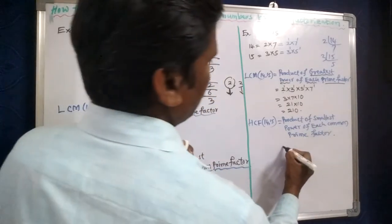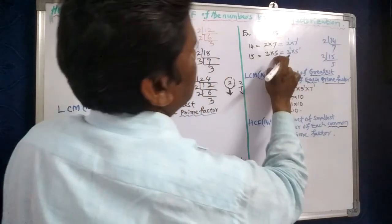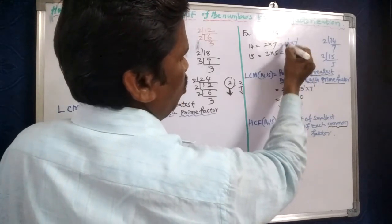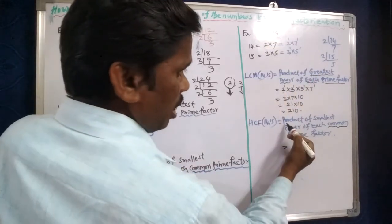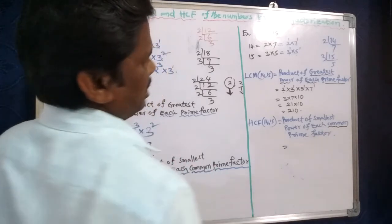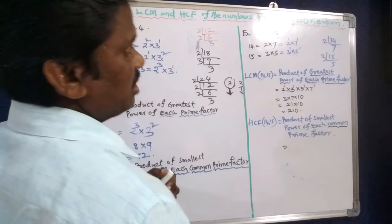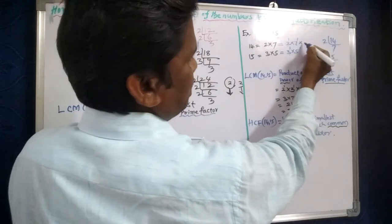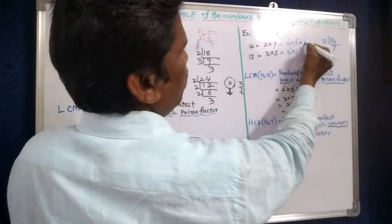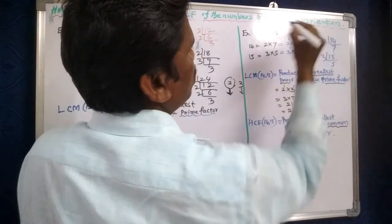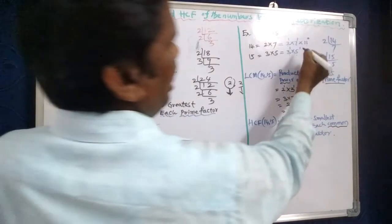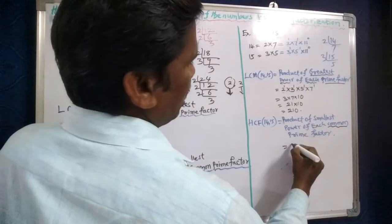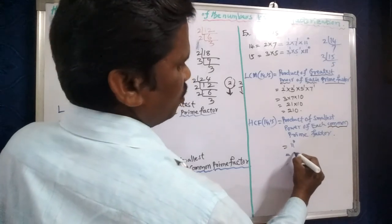Observing 14 and 15: the prime factors of 14 are 2 and 7, and of 15 are 3 and 5 — there are no common prime factors. So the HCF is 1. For example, we can write it as 11 to the power of 0, which equals 1, so no change in value — the HCF is 1.